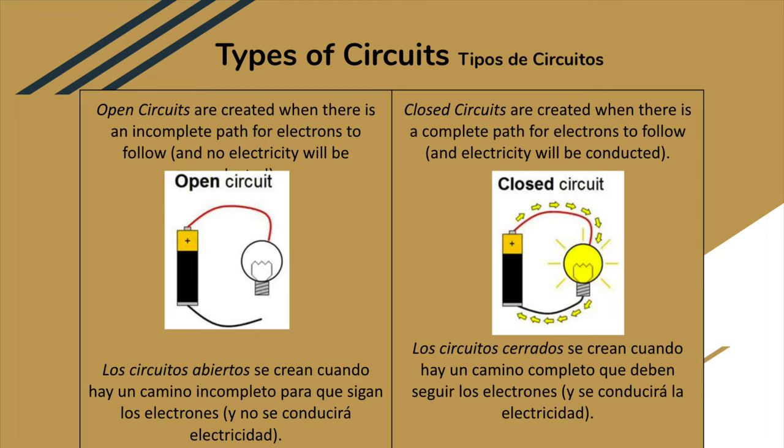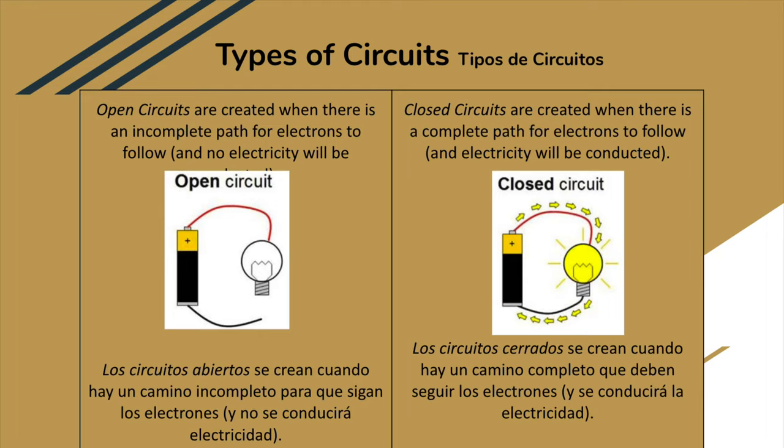For today's experiment, we're going to learn about two types of circuits. An open circuit is created when there is an incomplete path for electrons to follow — as in, the circle is open. A closed circuit is created when there is a complete path for electrons to follow and electricity will be conducted — as in, the circle is completely closed.